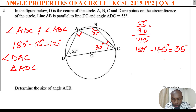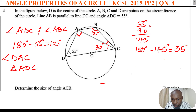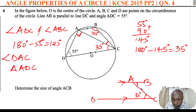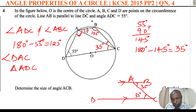Since AB is parallel to DC and AC is a transversal, we can use the properties of alternate angles. Angle DCA and angle BAC are alternate angles, so they are equal. Therefore, angle BAC equals 35 degrees.